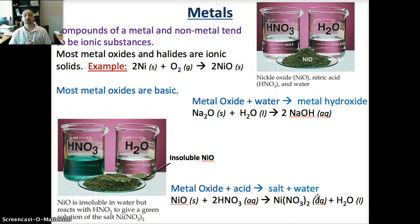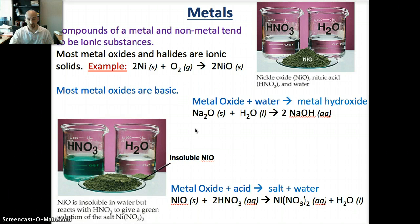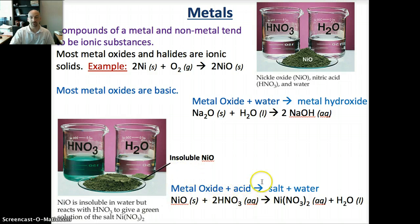You should be able to predict the products of these reactions. A reaction between a metal and a non-metal will form ionic substances. Metal oxides and metal halides are both going to be ionic solids. Metal oxides, which are basic, react with water to form metal hydroxides. And if metal oxides react with water to form metal hydroxides, then metal oxide plus acid is just like an acid-base reaction where we form a salt plus water.